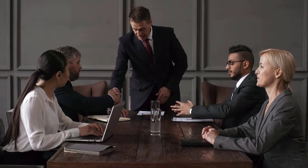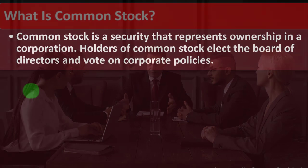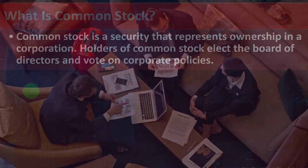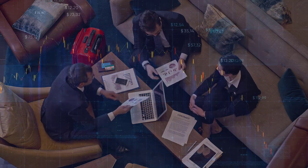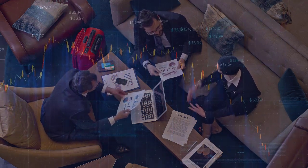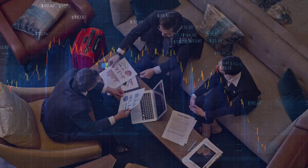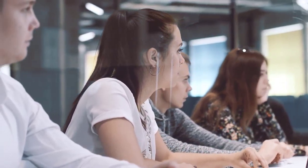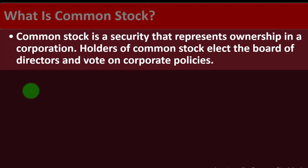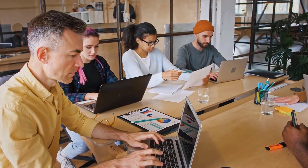A similar thing can happen with a corporation. We are basically the owners, though if we have a small number of shares we have small voting power. Similarly to a democratic republic, we vote for the board of directors. The board then hires management — the people actually running the day-to-day operations — who act as agents on behalf of the owners, the shareholders.